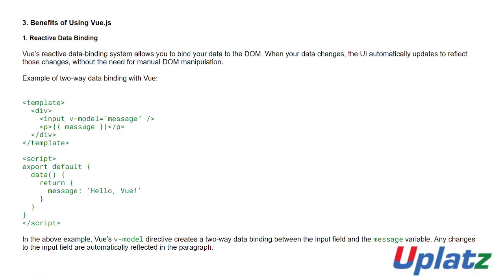When you change that input value, it will automatically change that message. This is very easy, and you'd have to write many more lines of code to do the same functionality with vanilla JavaScript — or even with Angular and React frameworks. Vue's v-model directive creates a two-way data binding between the input field and the message variable.